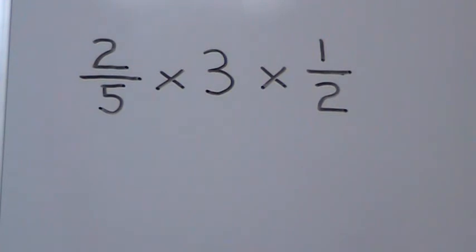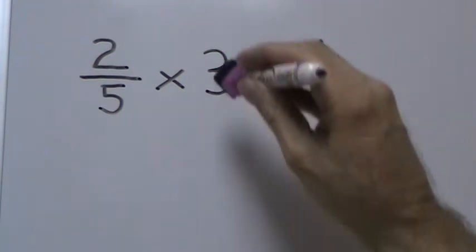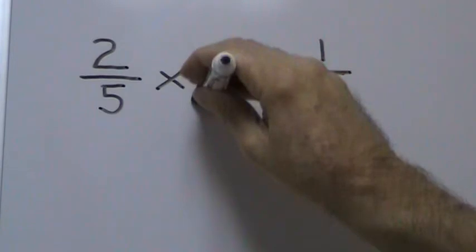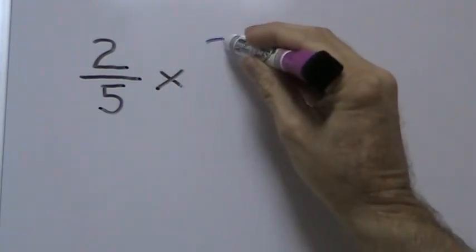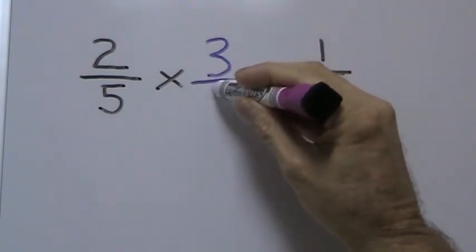In order to solve this problem, we have to take the whole number of 3 and turn it into fraction form. We do this by adding our fraction bar and a denominator of 1.